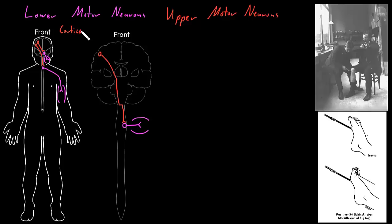The name corticospinal comes from 'cortico,' meaning it starts in the cerebral cortex, and 'spinal,' meaning it ends in the spinal cord. A tract is a collection of axons traveling together through the central nervous system.